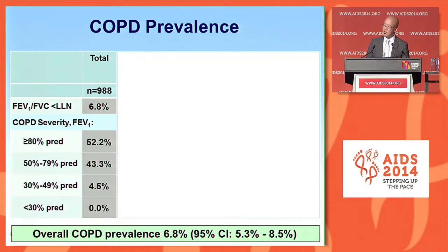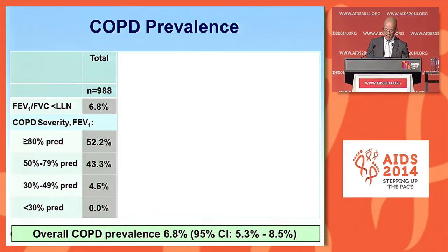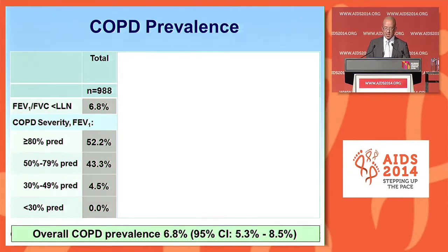Of those 1,026 participants, 988 had high-quality spirometry — 96% had excellent spirometry quality. We found that the overall COPD prevalence was 6.8%, which is within the range reported by previous studies. Most of the COPD was relatively mild or moderate in terms of the degree of impairment in FEV1. Greater than 80% of predicted would be mild COPD, 50 to 79% would be moderate COPD, with very few with more severe or very severe COPD.